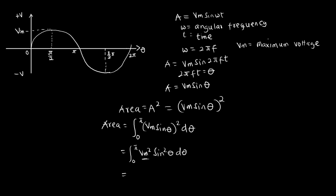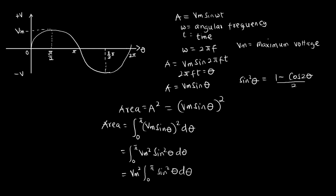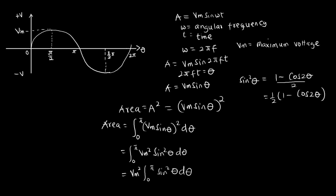Vm² is just a constant so I can bring it outside the integral. Now I'm going to substitute a trigonometric identity for sin²θ. From trigonometry, sin²θ is the same as (1 − cos2θ)/2, which I can write as ½·(1 − cos2θ). I'm going to substitute this in place of sin²θ.